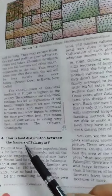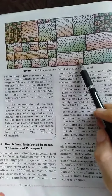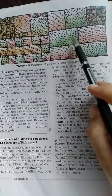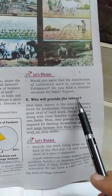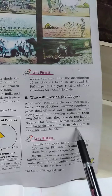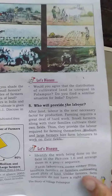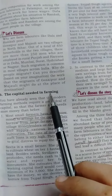The fourth point was how land is distributed among the farmers of Palampur — we discussed this with the help of a picture showing how land is distributed in village Palampur. The fifth point was who will provide the labour — medium or large farmers hire farm laborers to work on their land.